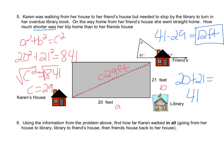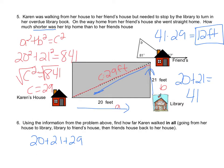Using the information from above, find how far Karen walked in all: house to library to friend's house, then friend's house back home. From her house to the library she went 20 feet, library to friend's house was 21 feet, and then back home was 29 feet. Adding all together gives us 70 feet total. Make sure you read carefully and go step by step.